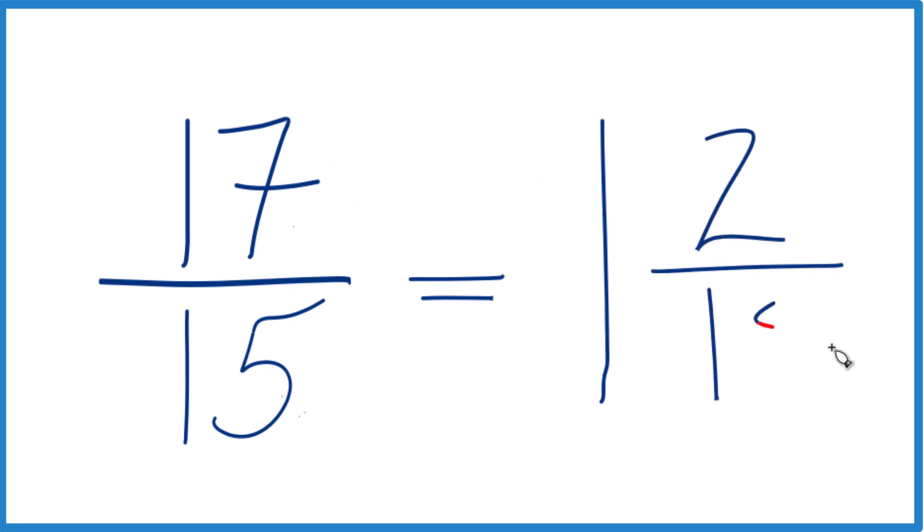Keep the 15 here across, and 17/15 equals 1 and 2/15. You can even check that: 1 times 15 is 15, plus 2 is 17. We keep the 15 the same.